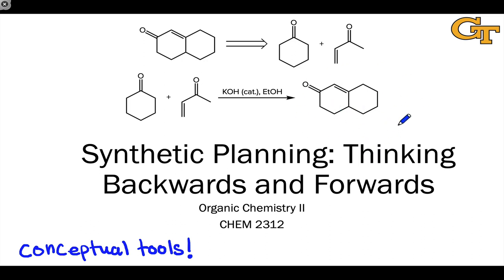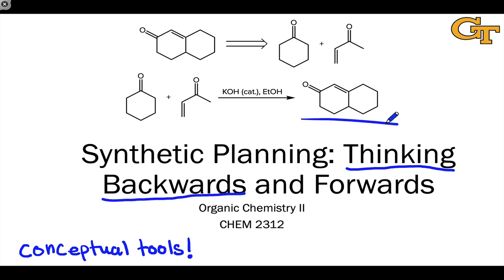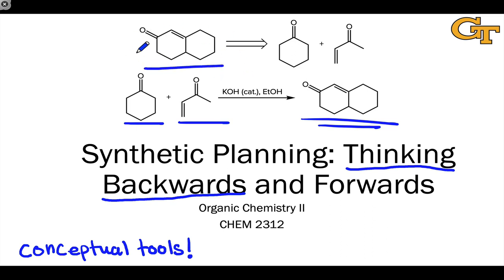For example, we'll look at the process of thinking backwards, which in a synthetic context is called retrosynthesis — working backwards from a target structure that's relatively complicated or complex to simpler starting materials. We'll learn how to depict that process, the idea that this molecule can be made from these starting materials, and how to think about it conceptually in terms associated with retrosynthesis.